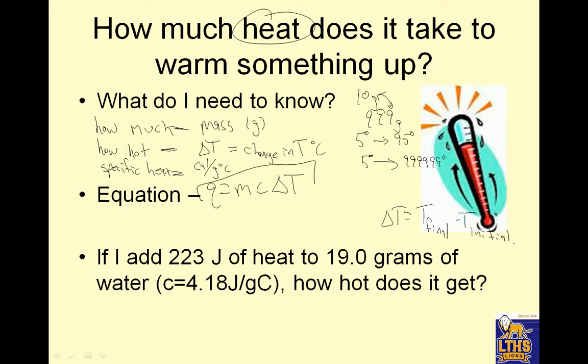Here's my equation. If I had 223 joules of heat, that's Q. To 19 grams of water, grams, that's mass. C, that's C. How hot does it get? So that just means, how much does the temperature rise? So Q equals MC delta T, or MC delta T as I prefer. My Q is 223. My mass is 19. My specific heat is 4.18. And I'm solving for delta T.